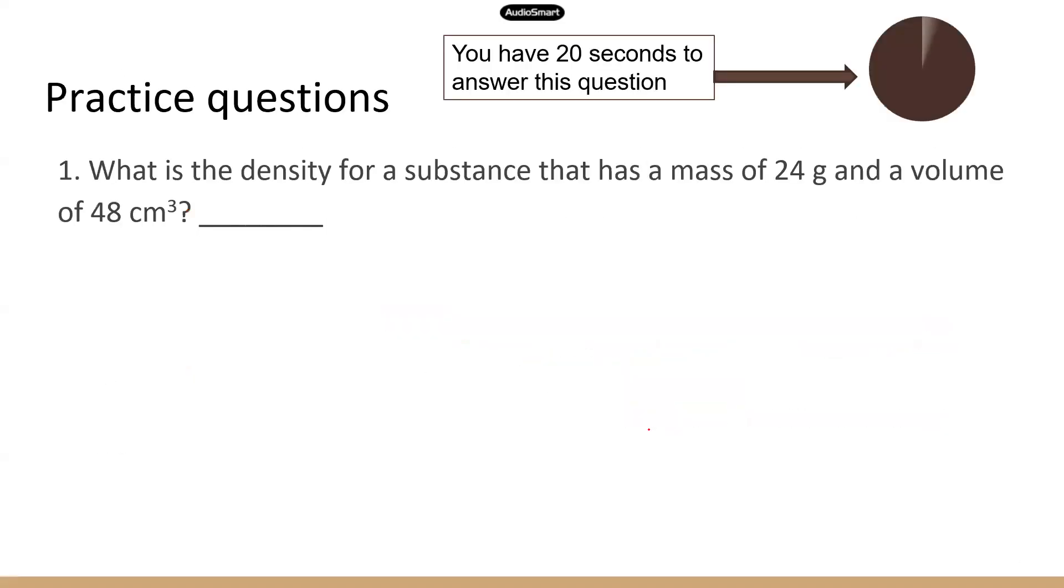Question one. What is the density of this substance, which has a mass of 24 grams and a volume of 48 cubic centimeters? So density is going to be the mass 24 divided by 48 cubic centimeters. So the correct answer is 0.5 gram per cubic centimeter. All right, next question.